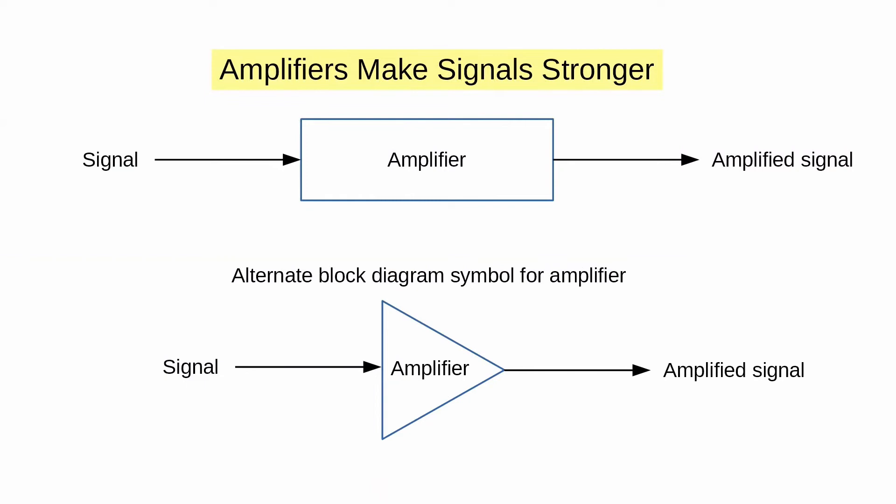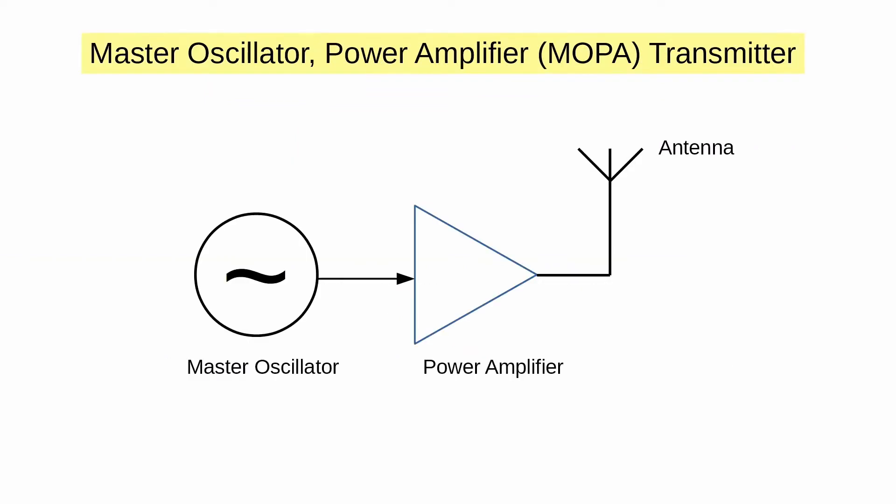One such circuit is an amplifier, which makes the radio wave stronger. A simple radio circuit consisting of a single oscillator and a single power amplifier is called a Master Oscillator Power Amplifier, or MOPA, and was very common in old tube radios.